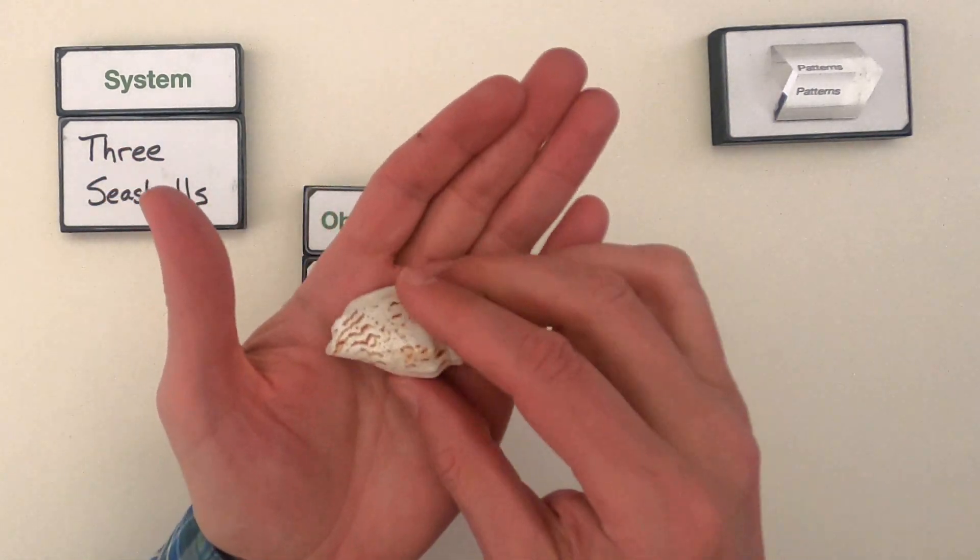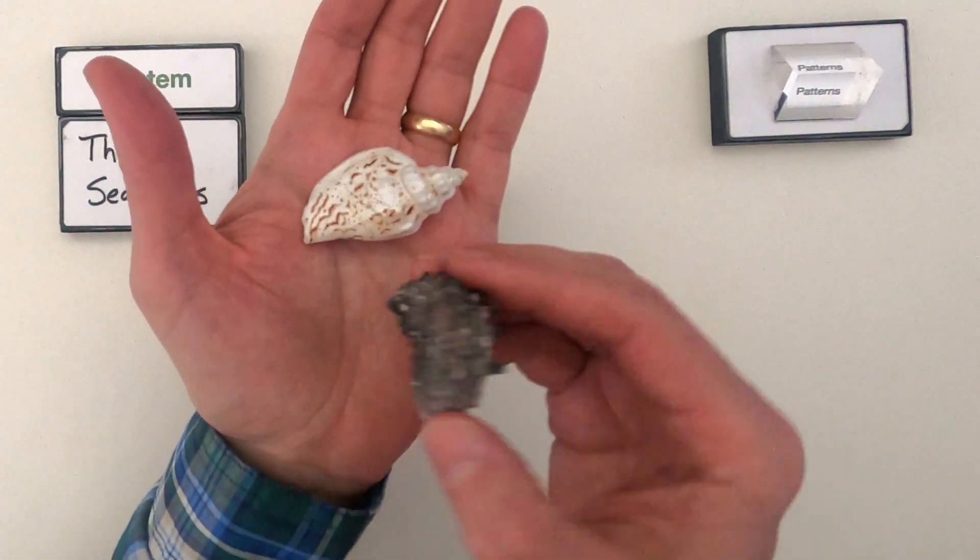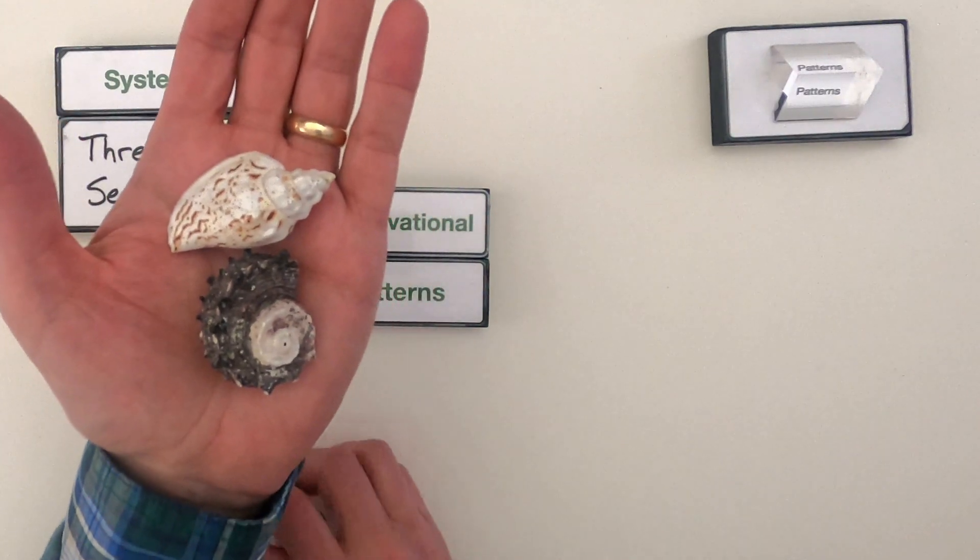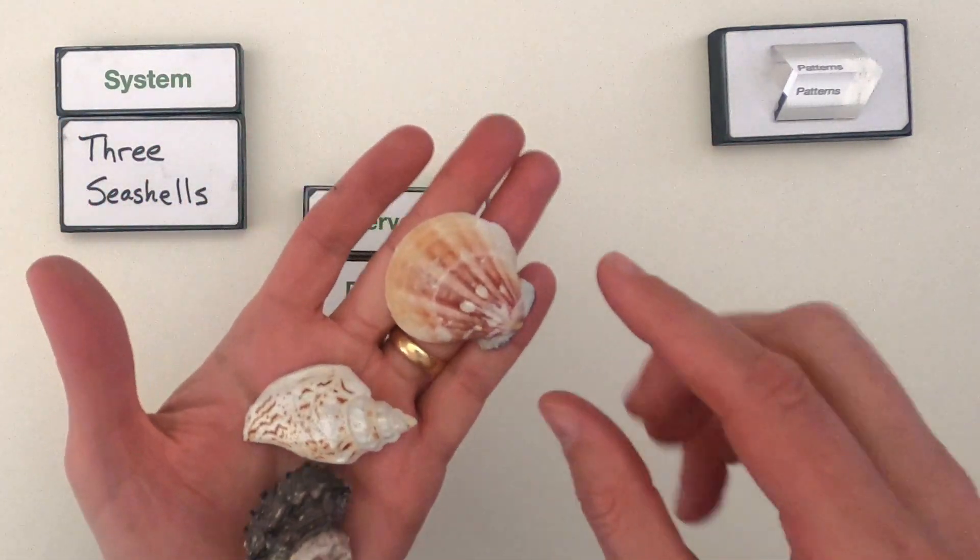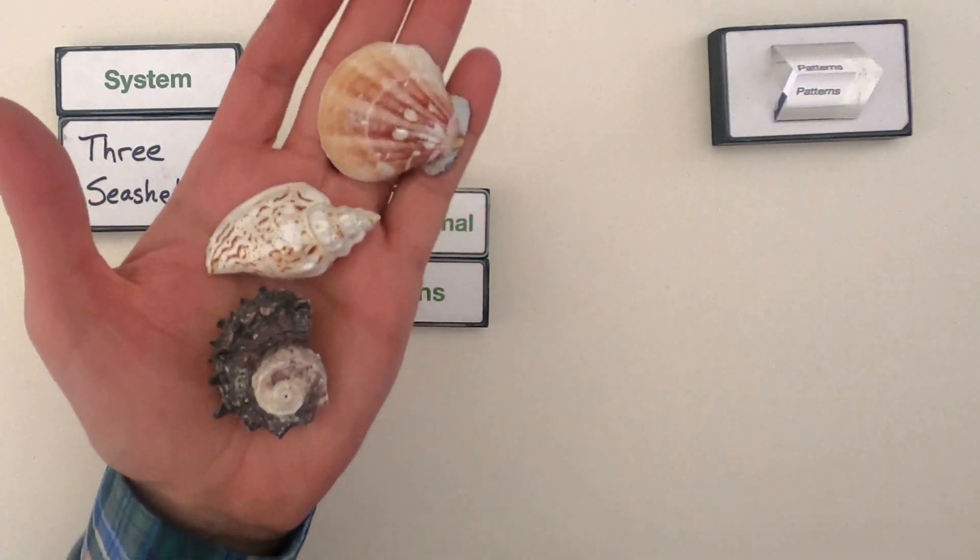I've got this white, looks like it's some kind of a snail. I've got a gray kind of snail, and then I have this, looks like a cockle, so it looks kind of like a clam.